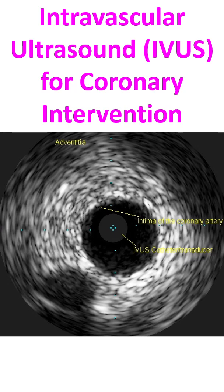Measurements include lumen, plaque, calcium, remodeling, stent length, and volumetric measurements. Plaque morphology can be assessed in terms of its geometry and echogenicity. In terms of geometry, the size of the plaque, its relationship to luminal stenosis, arterial remodeling, and eccentricity can be evaluated. Echogenicity could be assessed regarding echolucent, echodense, as well as calcified plaques.